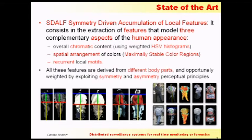Usually this problem has not been addressed much in the state of the art — at least for past years — but in the last two years there has been a lot of research done on it. This is one example of a state-of-the-art algorithm for solving re-identification. It's based only on images of a person, and it's very simple: it divides the appearance of a person into three parts — head, torso, and legs — and discards the head part because it's usually too small.